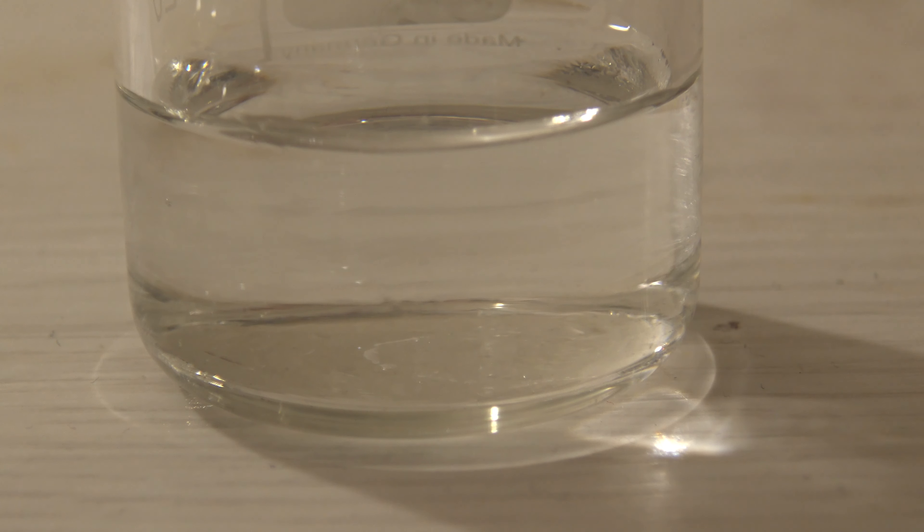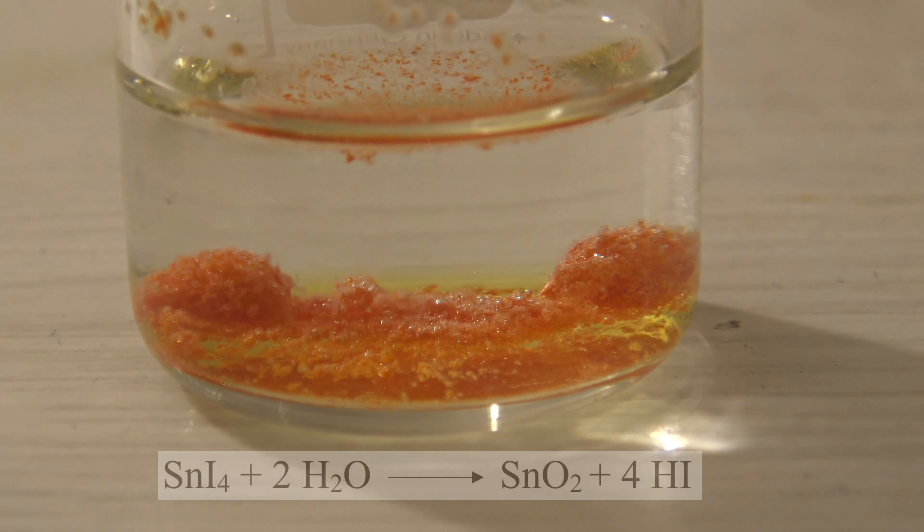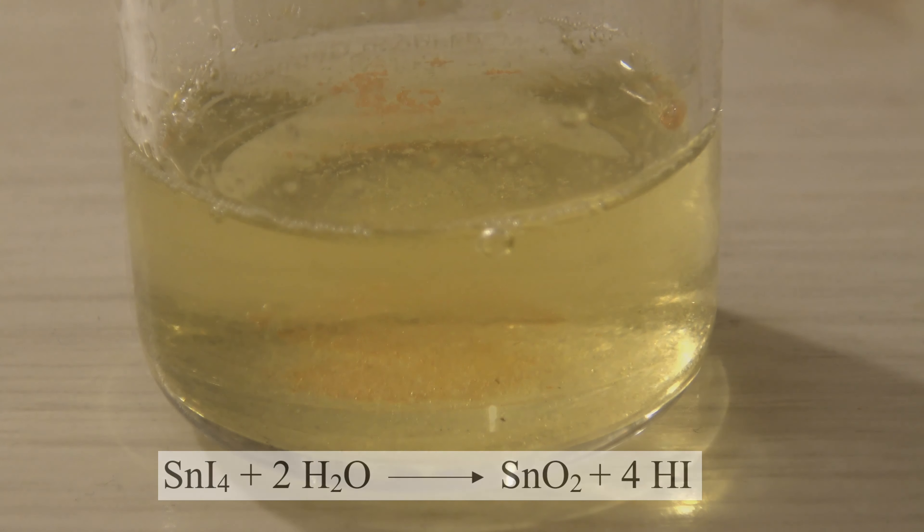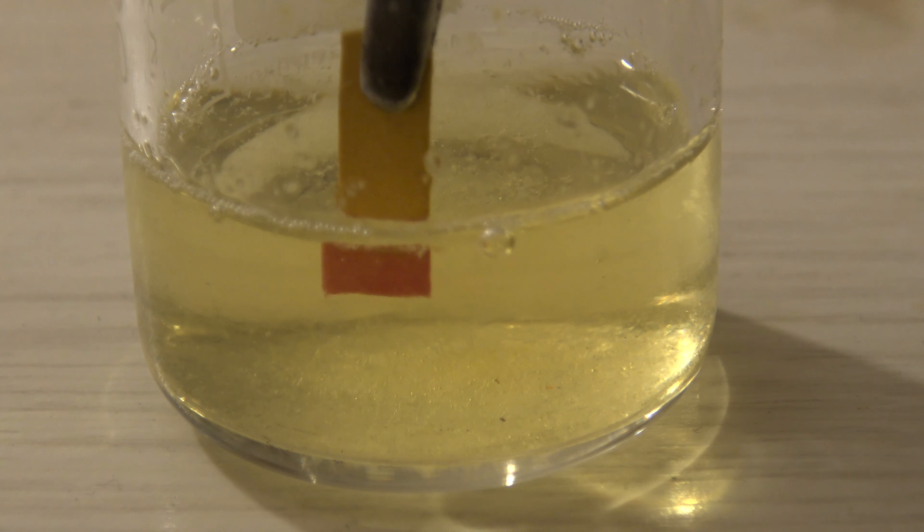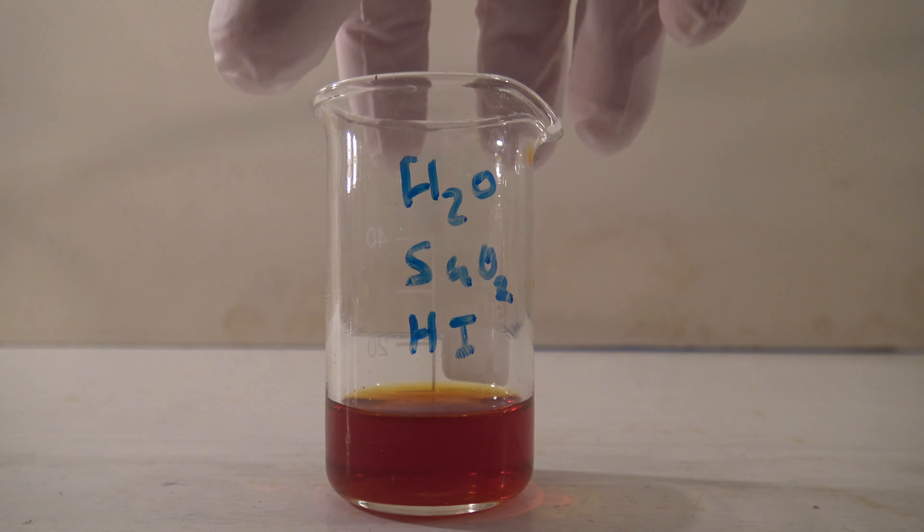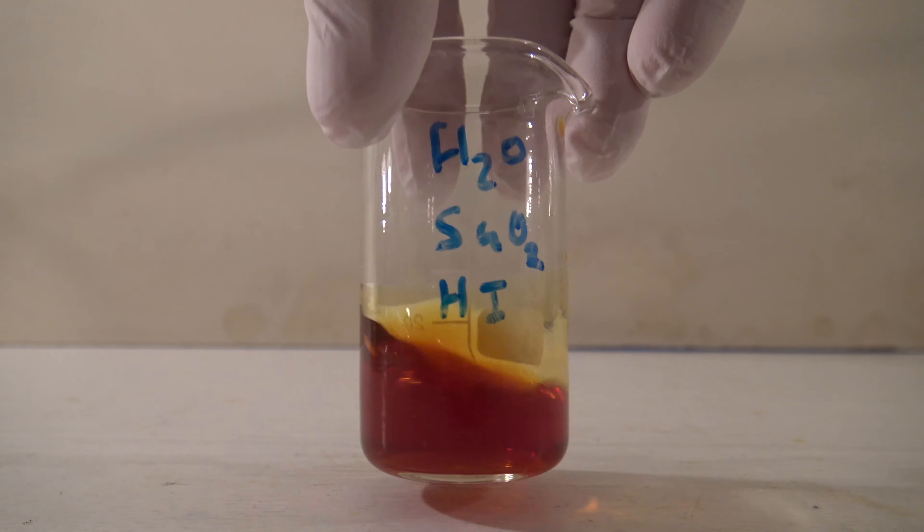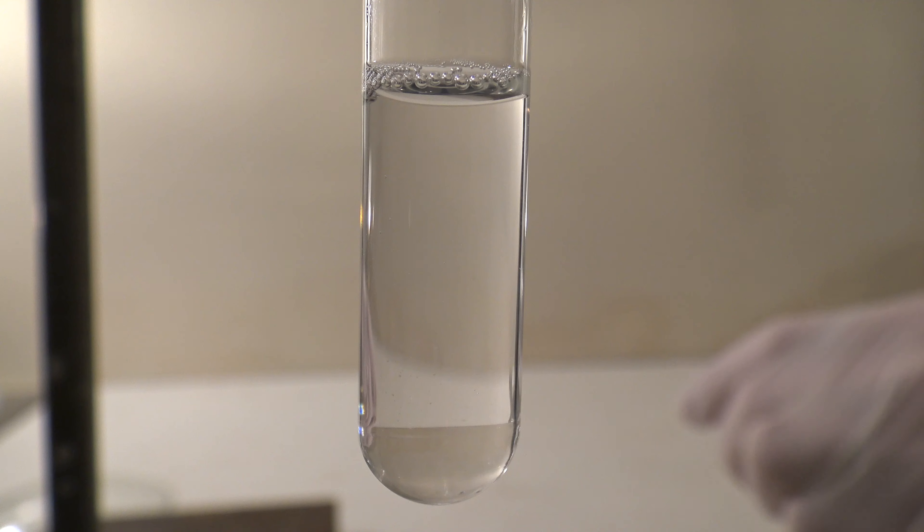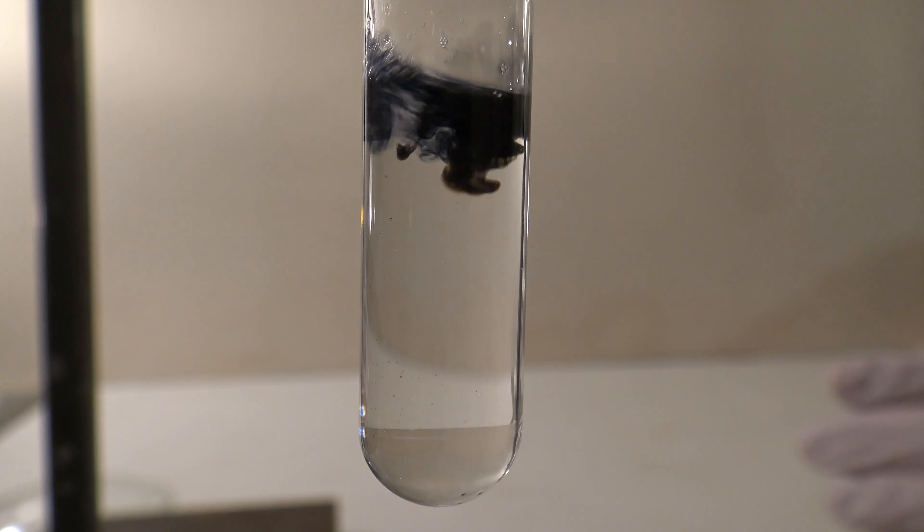When tin(IV) iodide comes in contact with water, a slow hydrolysis takes place and insoluble tin(IV) oxide and hydrogen iodide are formed. The hydrogen iodide causes the solution to become strongly acidic. It can be oxidized by the oxygen from the air, which causes iodine to form slowly and leads to the color of the solution. To test for iodine, a solution of starch can be used. The typical complex of iodine and starch is formed.